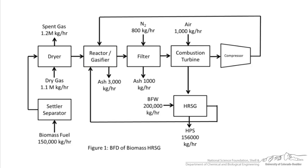This next block flow diagram is a bit more complicated. This diagram was based on several biomass to steam power plant processes, so essentially this is a diagram of a power plant that's run on biomass. Here biomass is converted to high pressure steam, and then subsequently used to spin turbines, which then generate power.